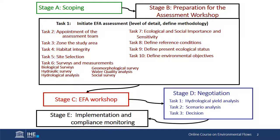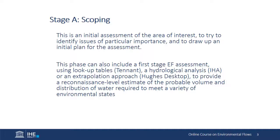The scoping stage is an initial assessment of the area of interest to identify issues of particular importance and to draw up an initial plan for the assessment. This phase can also include a first-stage environmental flow assessment using look-up tables such as the Tennant-Montana methodology, or a hydrological analysis such as the Index of Hydrological Alteration, or an extrapolation approach such as Dennis Hughes' desktop method, to provide a reconnaissance-level estimate of the probable volume and distribution of water required to meet a variety of environmental conditions.